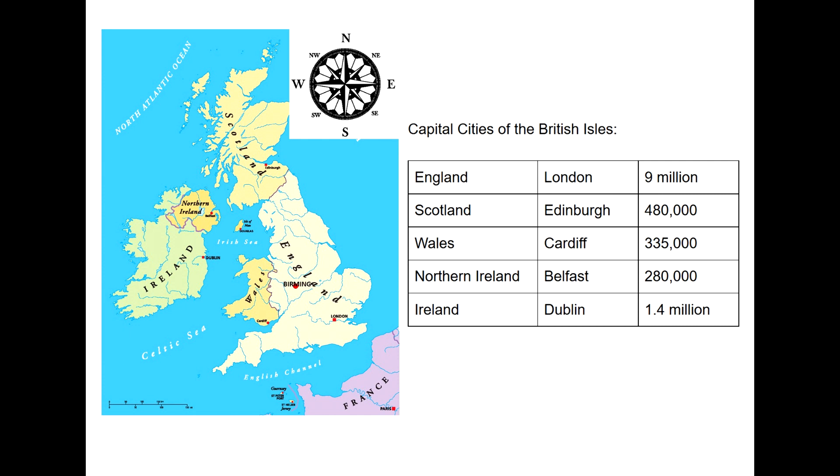And then finally, Dublin is Ireland's capital, with 1.4 million residents. Now you know the difference between the British Isles, the British Islands, the United Kingdom and Great Britain, as well as all of the capital cities.